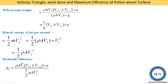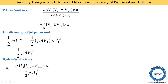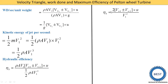Hydraulic efficiency equals work done divided by kinetic energy. So: eta_h equals [rho*A*V1*(VW1 plus/minus VW2)*U] divided by [(1/2)*rho*A*V1³]. After cancelling rho*A*V1 and moving the 2 to the numerator, we get: eta_h equals 2*(VW1 plus/minus VW2)*U divided by V1².